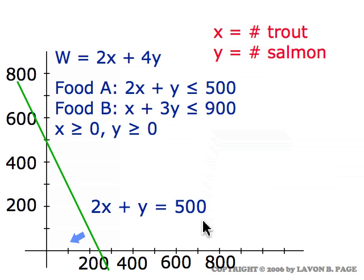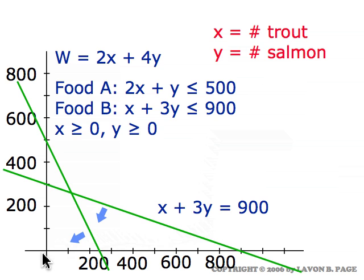The food A constraint line is the green line shown here and the solution region is the points on or to the left of the green line. The food B constraint line is the second green line shown here with the solution region being to the side that the second blue arrow points at. Of course the non-negative constraints put us in the first quadrant.